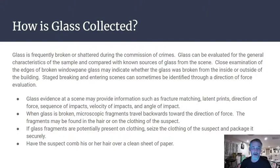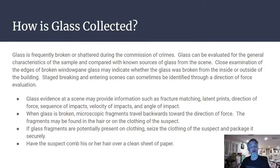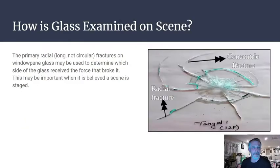When glass is broken, microscopic fragments travel backwards toward the direction of force and can be found in the hair or clothing of suspects. If glass fragments are potentially present in clothing, seize and package the clothing securely. Also have the suspect comb their hair over a clean sheet of paper and collect any fragments that fall.